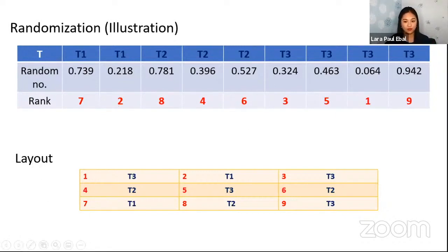And then we can have the layout. So as you can see, T3 is assigned to this one here, and then T1. Can you follow? For this two, we have T1. And then for this three, we have T3 again. Then for four we have T2. So this is now your layout.